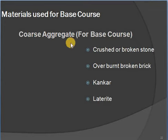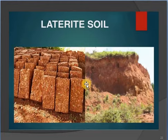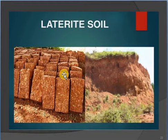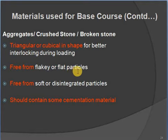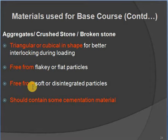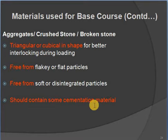Materials used for base course: crushed or broken stone, overburnt or broken brick (kankar), or laterite. Crushed stone should be triangular or cubical in shape for better interlocking during loading, free from flaky or flat particles, free from soft or disintegrated particles, and should contain some cementation material like limestone. These properties ensure good interlocking and strength.